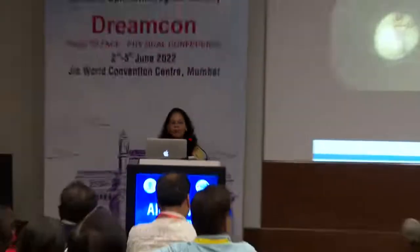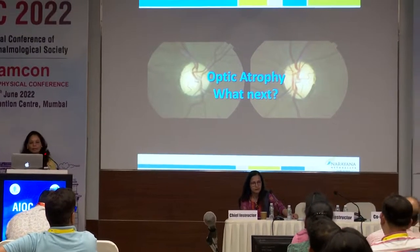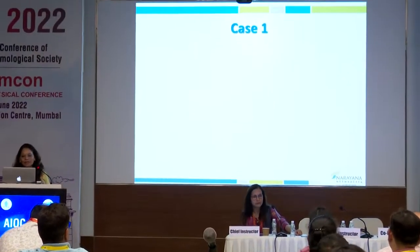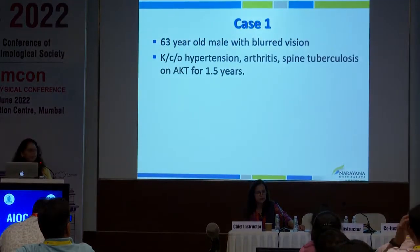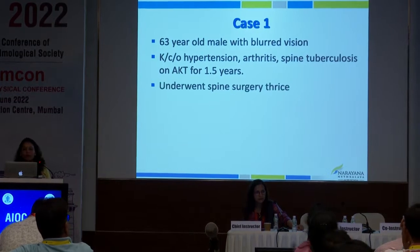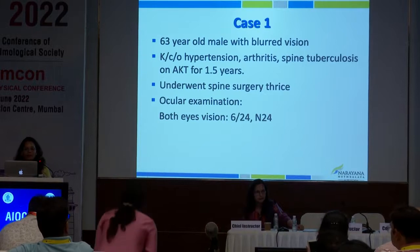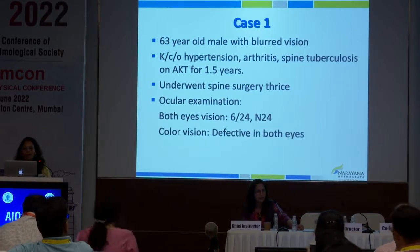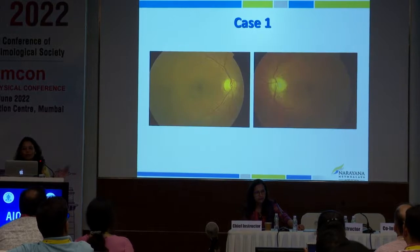When you have one or both pale discs, you need to know what to do next. Case one is a 63-year-old male with blurred vision, known case of hypertensive arthritis, spine tuberculosis on AKT for 1.5 years, and underwent spine surgery thrice. Ocular examination showed vision of 6/24 on N24, defective color vision, and a relative scotoma. You can see the presence of a pale disc.